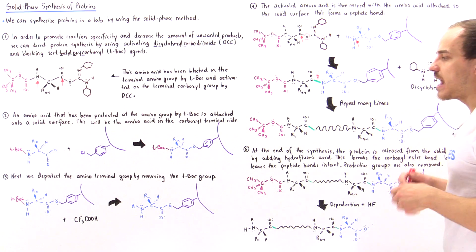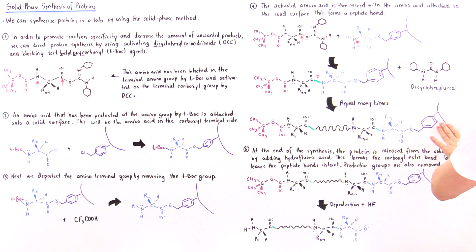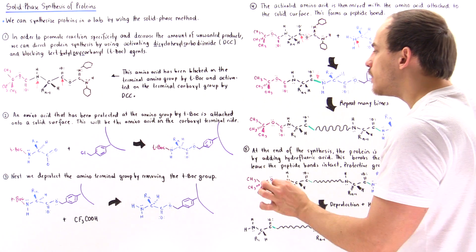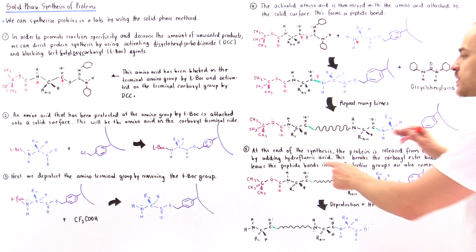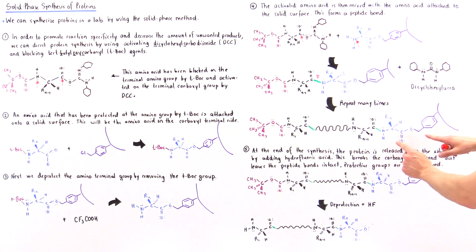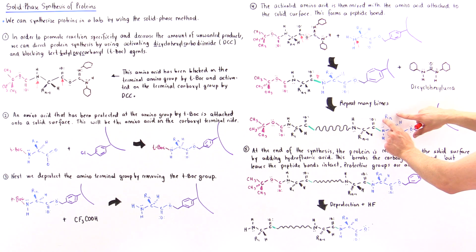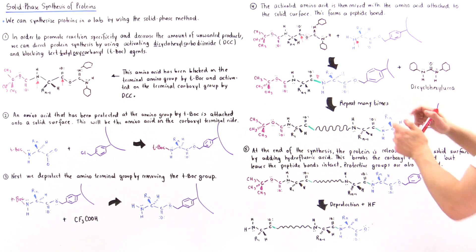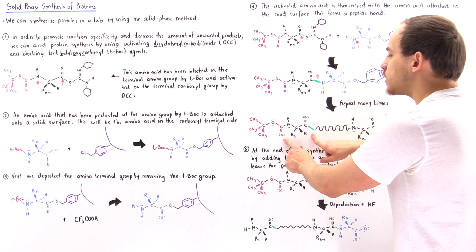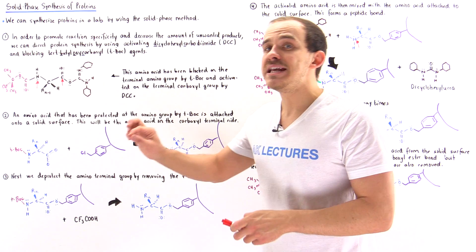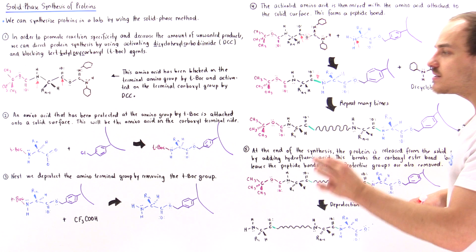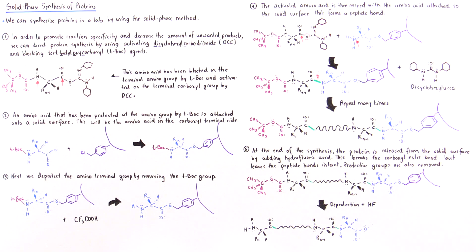After repeating those steps many times, we eventually form a polypeptide chain consisting of N number of amino acids. The first amino acid contains the R group R1, and the last amino acid contains R group Rn. The amino acid we began with is found on the alpha carboxyl terminal end, while the final amino acid added is found on the alpha amino terminal end of the polypeptide chain.